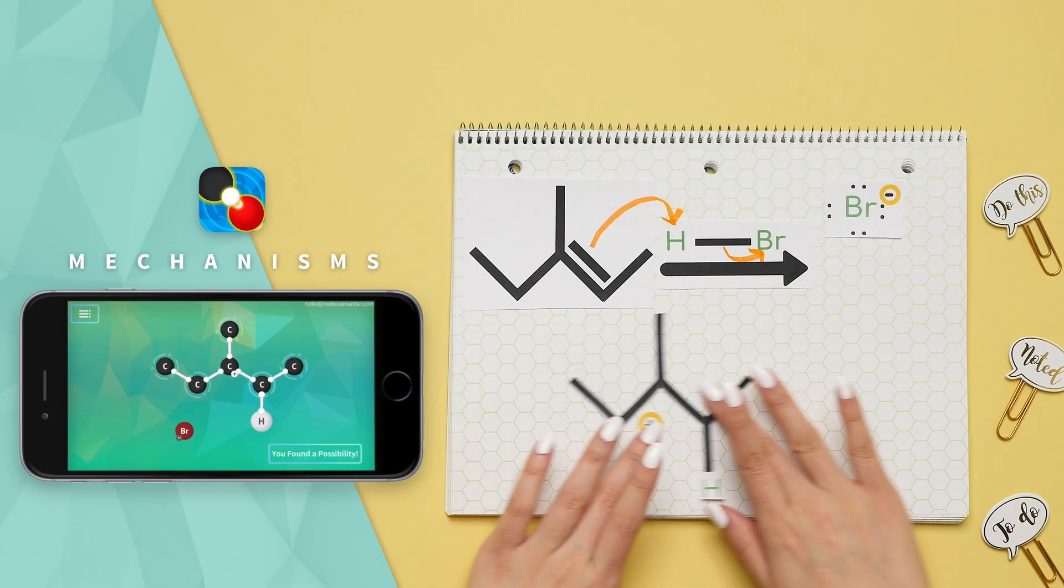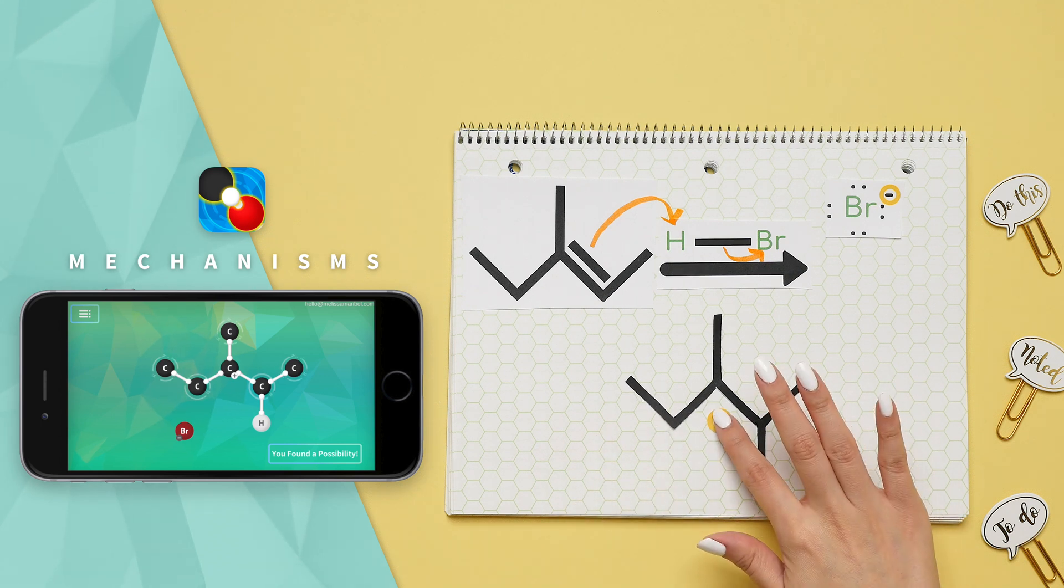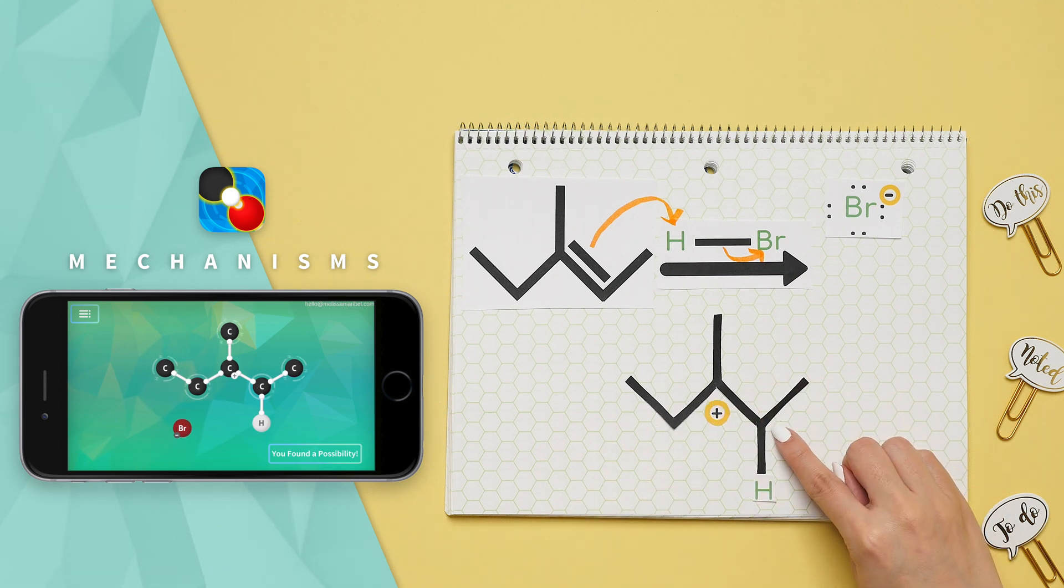So in this case our tertiary carbocation is the most stable so the hydrogen would favor the least substituted carbon.